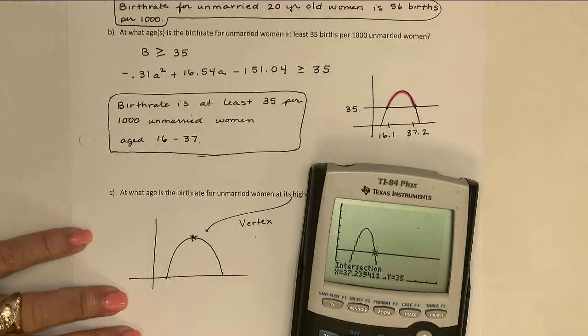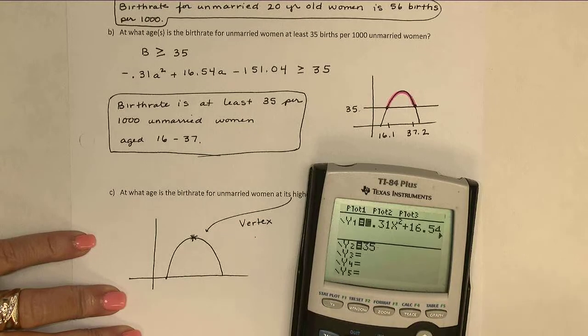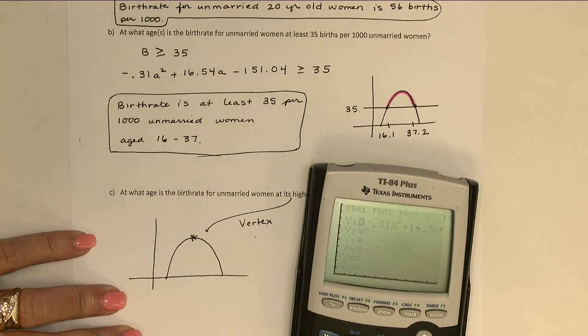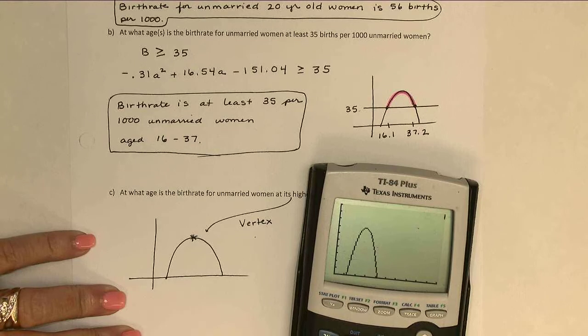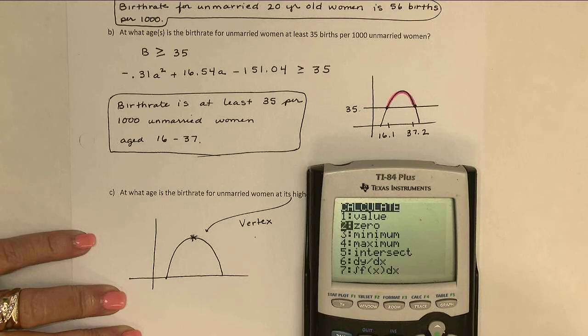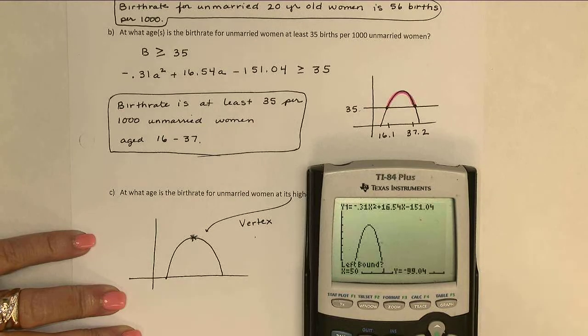We're allowed to use the calculator. So let's see. I don't need the 35 anymore. I'm going to get rid of that. And on my calculator, I'll go to second calc. And this is a maximum, so maximum.